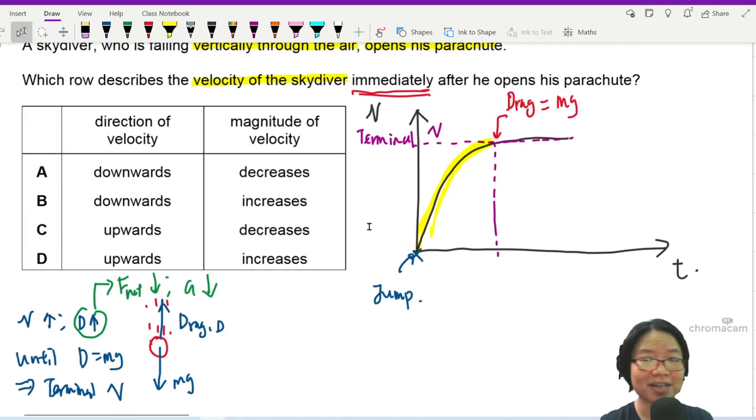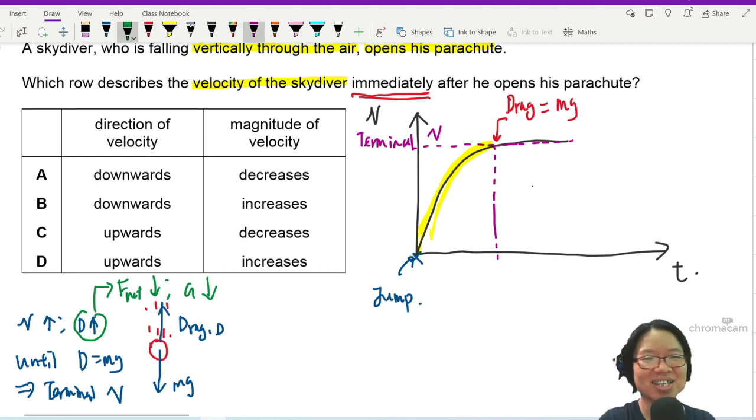But they're not asking this part. They're asking what immediately after he opened the parachute. Let's say he opens the parachute here. When he opens the parachute, the speed will drop very fast until you reach terminal again.